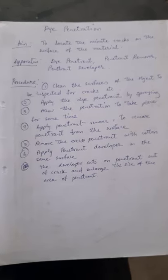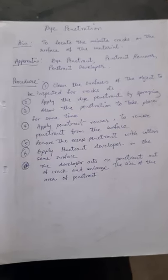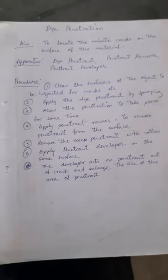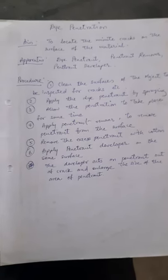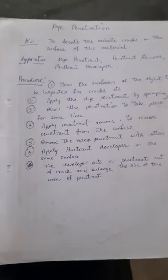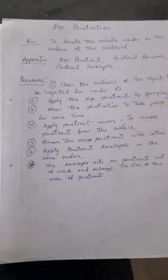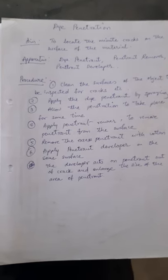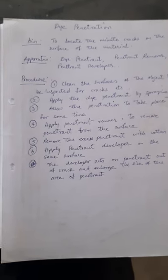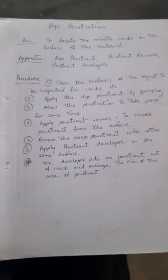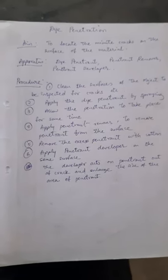Procedure: Clean the surface of the object to inspect the cracks. Apply the Dye Penetrant by spraying. Allow the penetration to take place for some time. Apply the Penetrant Remover to remove the penetrant from the surface, then remove the excess penetrant with cotton. Apply the Penetrant Developer on the same surface — the developer draws the penetrant out of the cracks and shows the cracks on the surface.